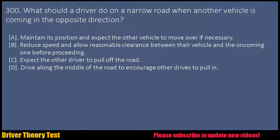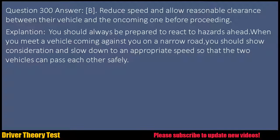Question 300: What should a driver do on a narrow road when another vehicle is coming in the opposite direction? a. Maintain its position and expect the other vehicle to move over if necessary. b. Reduce speed and allow reasonable clearance between their vehicle and the oncoming one before proceeding. c. Expect the other driver to pull off the road. d. Drive along the middle of the road to encourage other drivers to pull in. Question 300 Answer: B. Reduce speed and allow reasonable clearance between their vehicle and the oncoming one before proceeding.